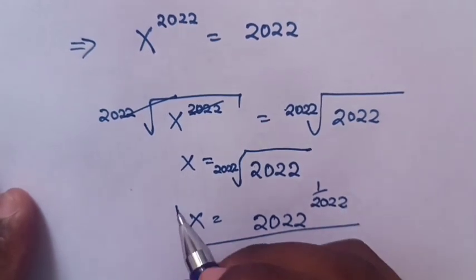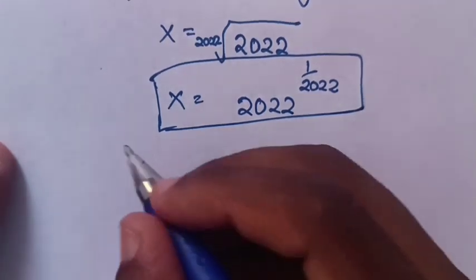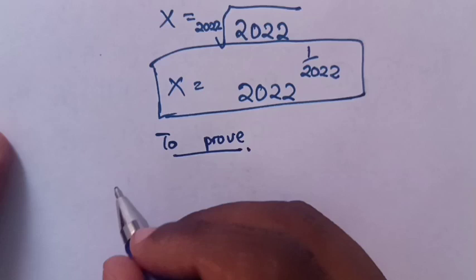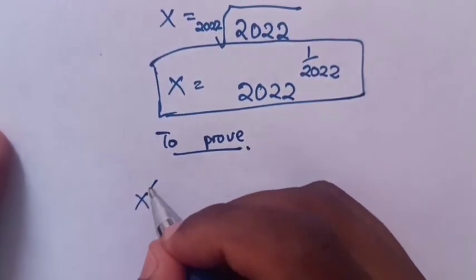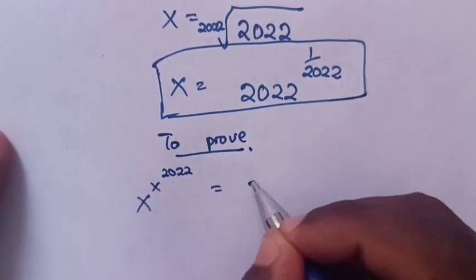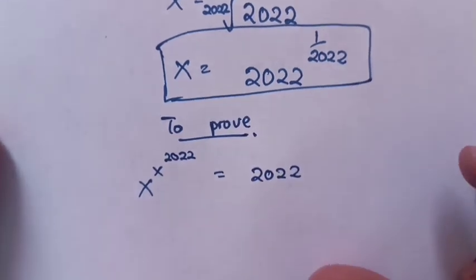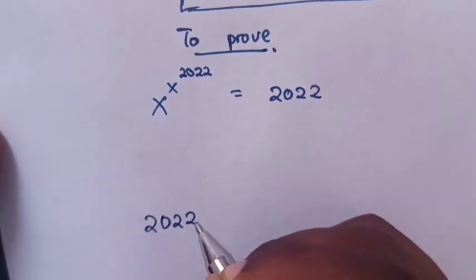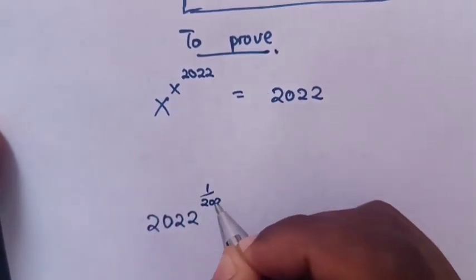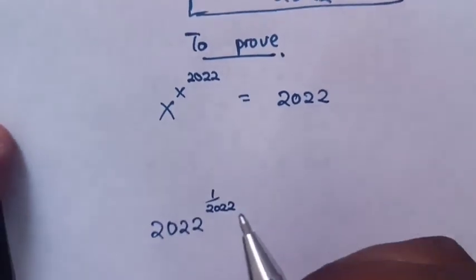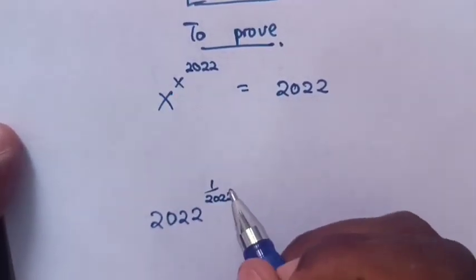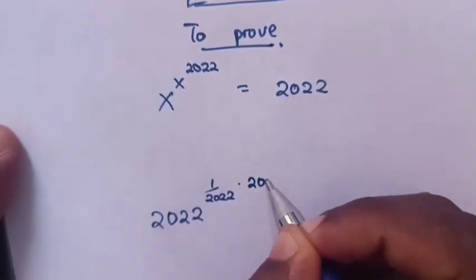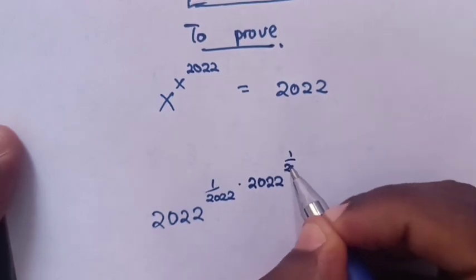This is the answer. Now to prove that this value of x is true, from our original question x power of x power of 2022 equals 2022. To prove it, x equals 2022 power of 1 over 2022. Again, the power of 1 over 2022 multiplied by the power of x, where x is 2022 power of 1 over 2022.